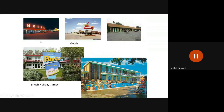Motels are small hotels found along travel routes, with small rooms. Holiday camps, like British holiday camps, allow guests to stay in one place where everything they need is provided — so they don't need to go out much.